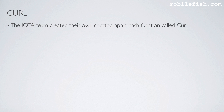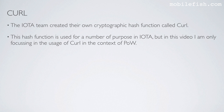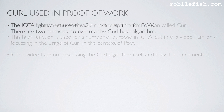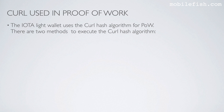The IOTA team created their own cryptographic hash function called curl. This hash function is used for a number of purposes in IOTA, but in this video I'm only focusing on the usage of curl in the context of proof of work. I'm not discussing the curl algorithm itself and how it is implemented. The IOTA light wallet uses the curl hash algorithm for proof of work. There are two methods to execute the curl hash algorithm.